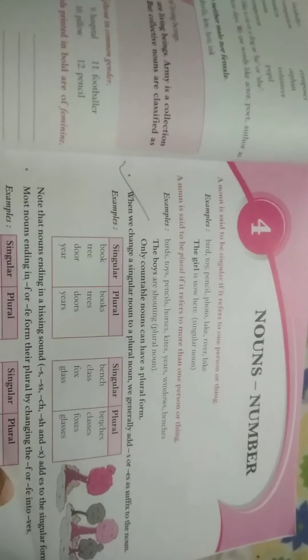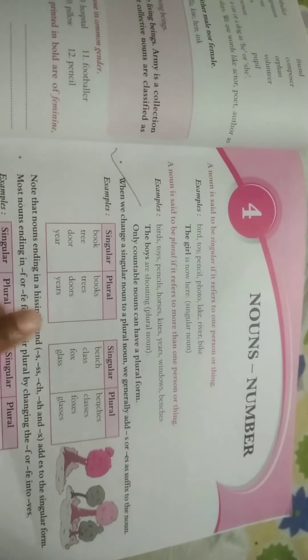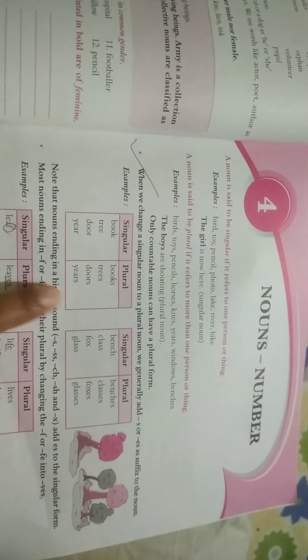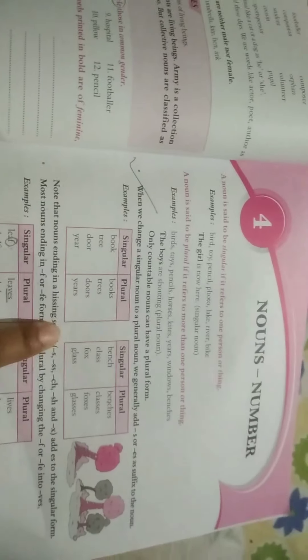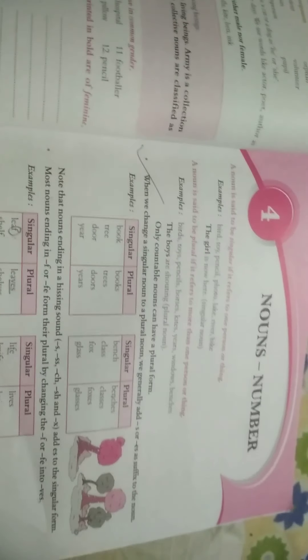Nouns number, two types of numbers, singular and plural. Singular talks about one thing, whereas plural talks about more than one thing. We studied about different methods of transforming singular noun into plural noun. Just go through the video carefully and whatever the method is given, just follow that method.